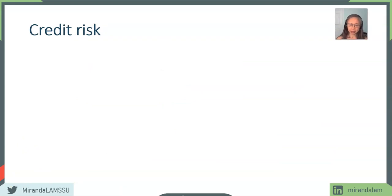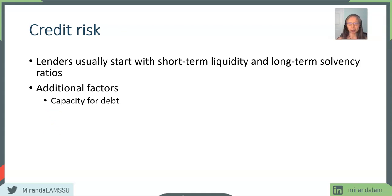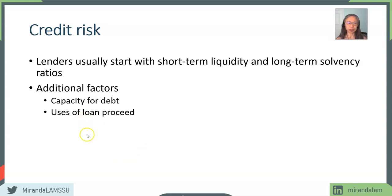For short-term and long-term solvency ratios, we rely a lot on financial statement data. For credit risk, this is more qualitative rather than quantitative. Lenders will start with the short-term liquidity ratio and long-term solvency ratio, and then consider additional factors such as capacity — how much more debt can they take on before those ratios become critical — as well as the purpose of the loan: is it for expansion, to pay off prior liabilities, or to settle lawsuits? The use of the loan is also important and reflects in the cash flow.